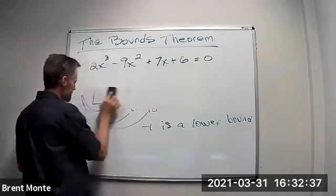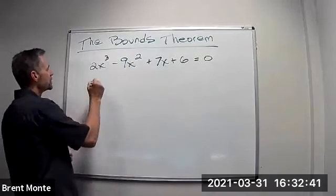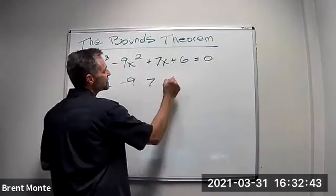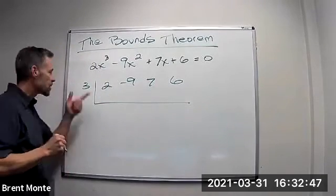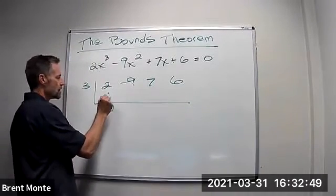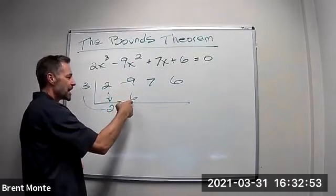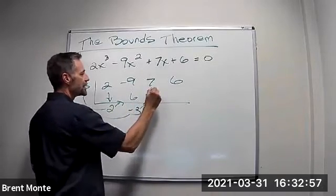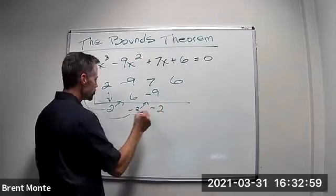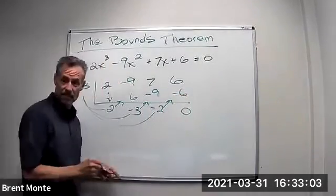Let's look at three. So let's try positive three. Let's look at a positive one. So two, negative nine, seven, six. We'll try a three. So I bring down the two, three times two is six, negative nine plus six is negative three, multiply by three I get negative nine, which is negative two, multiply by three I get negative six, which is zero.